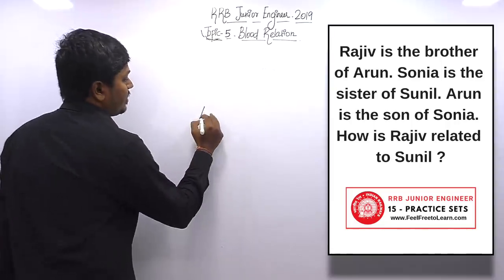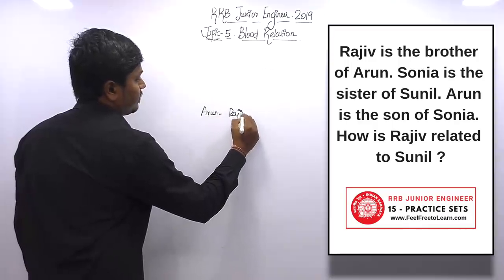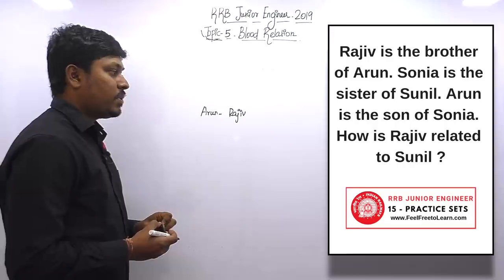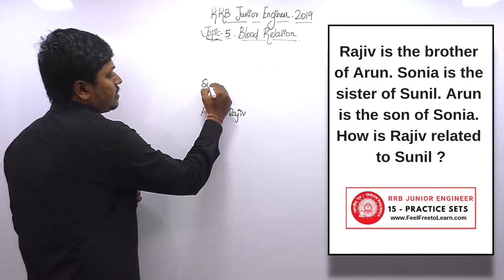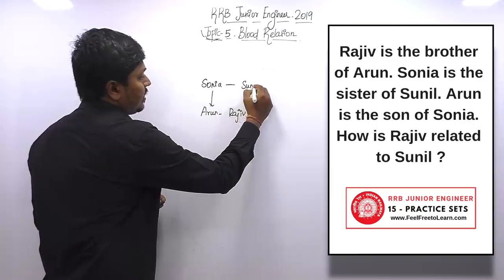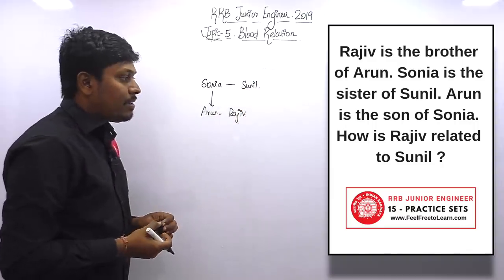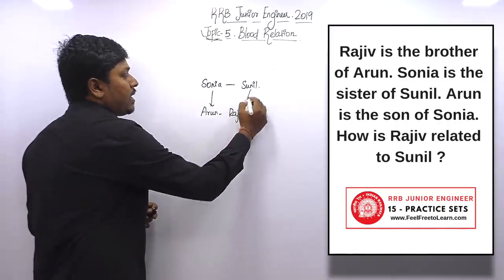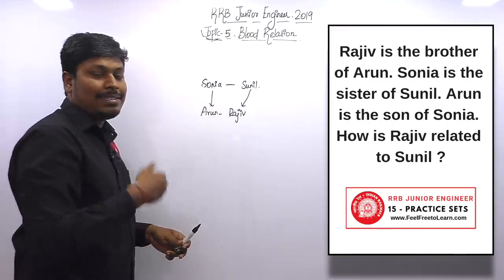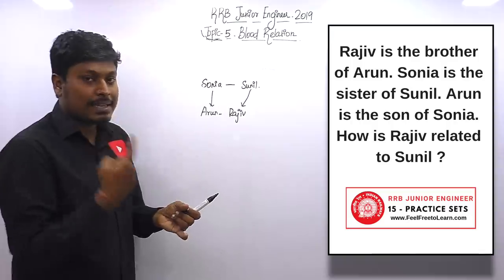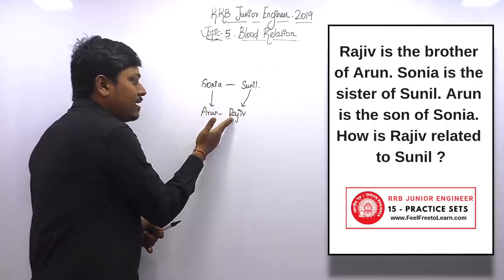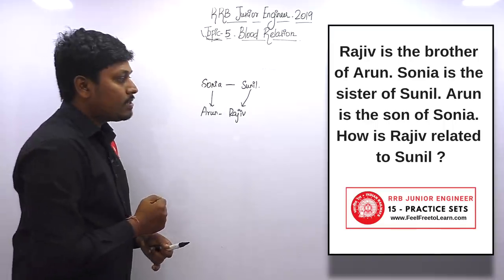Question number ten: Rajiv is the brother of Arun, so Arun has a brother Rajiv. Sonia is the sister of Sunil. Arun is the son of Sonia. The question is: how is Rajiv related to Sunil? From Sunil, Sonia is the sister. Sonia's son is Arun and also Rajiv. A sister's son is called a nephew. The answer is nephew.